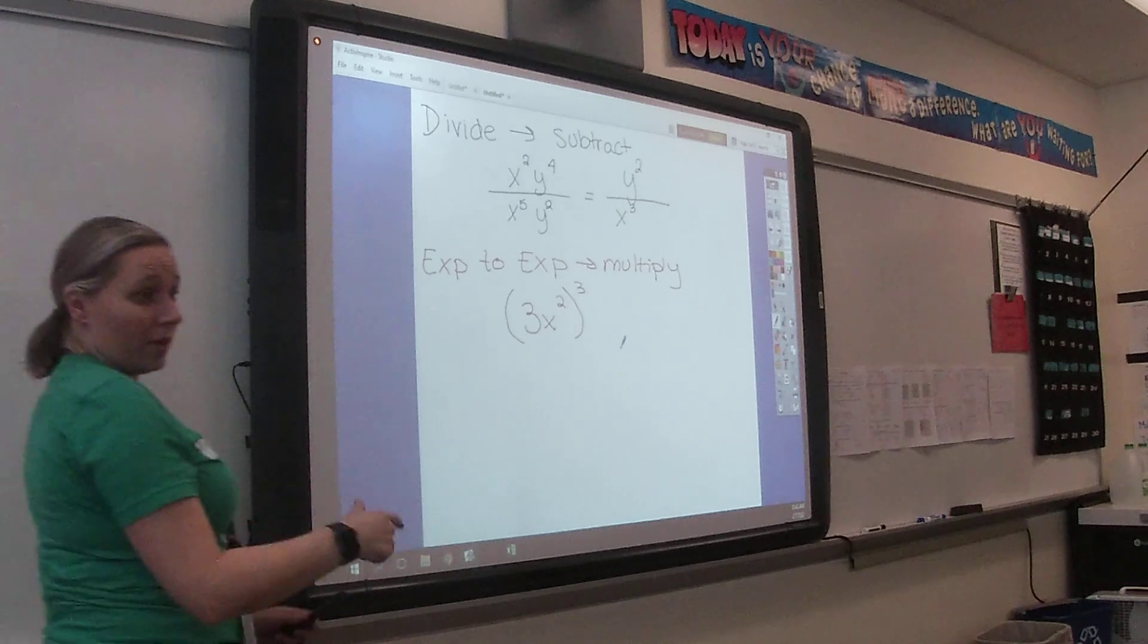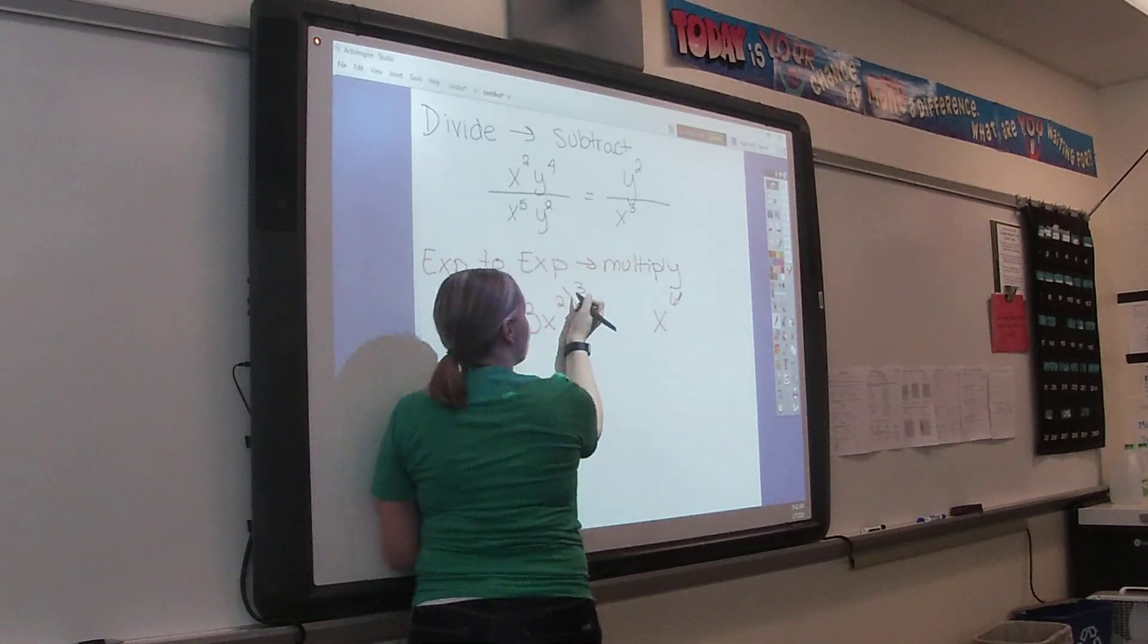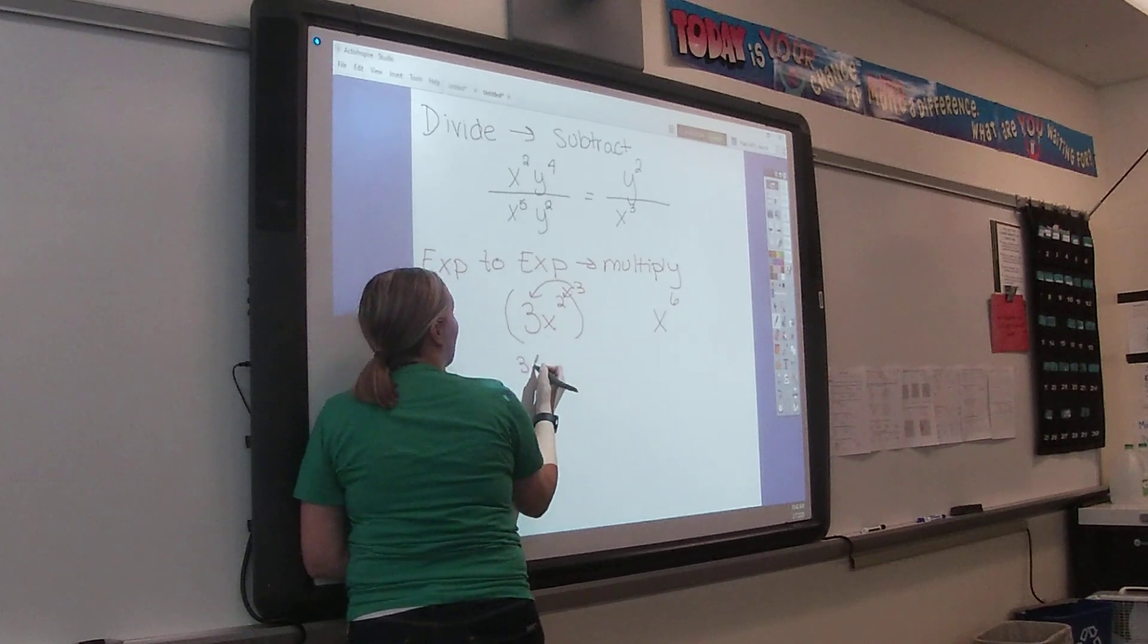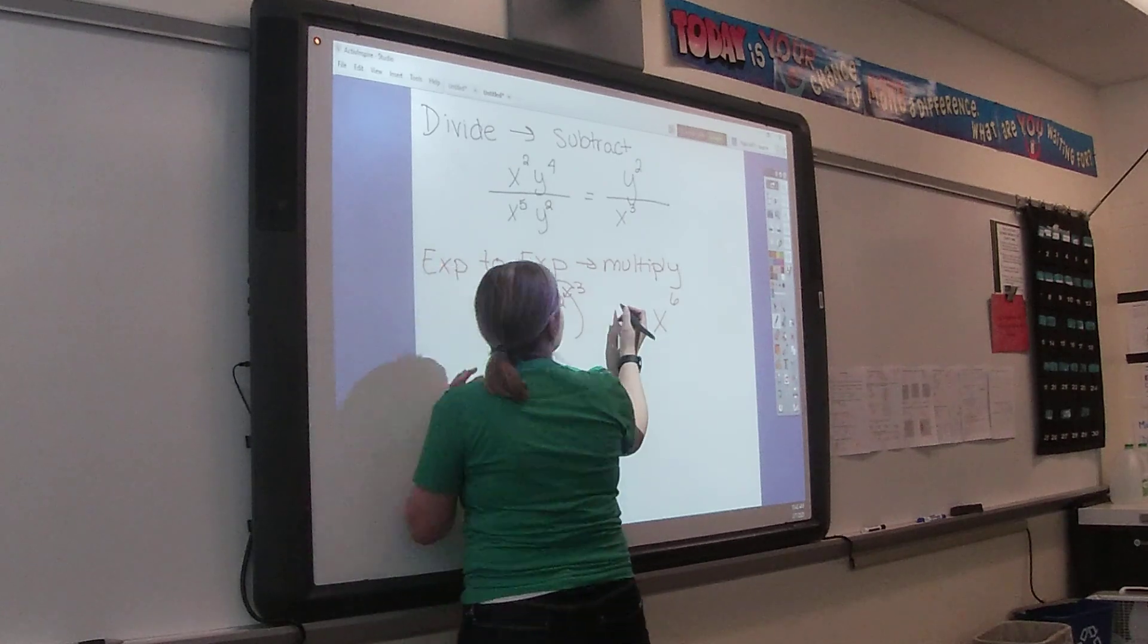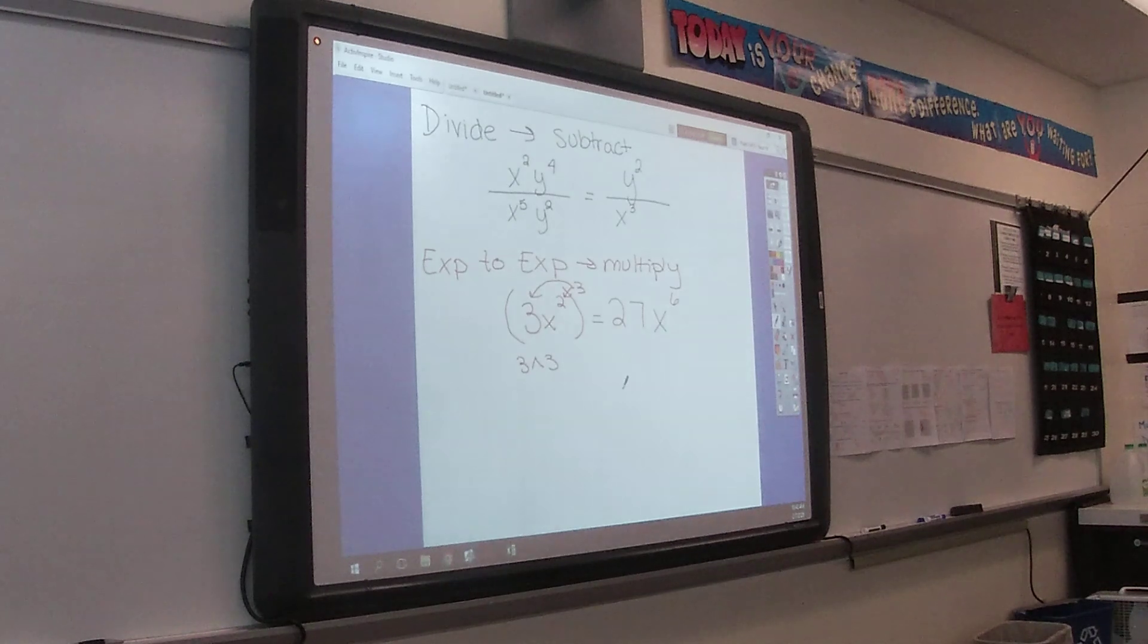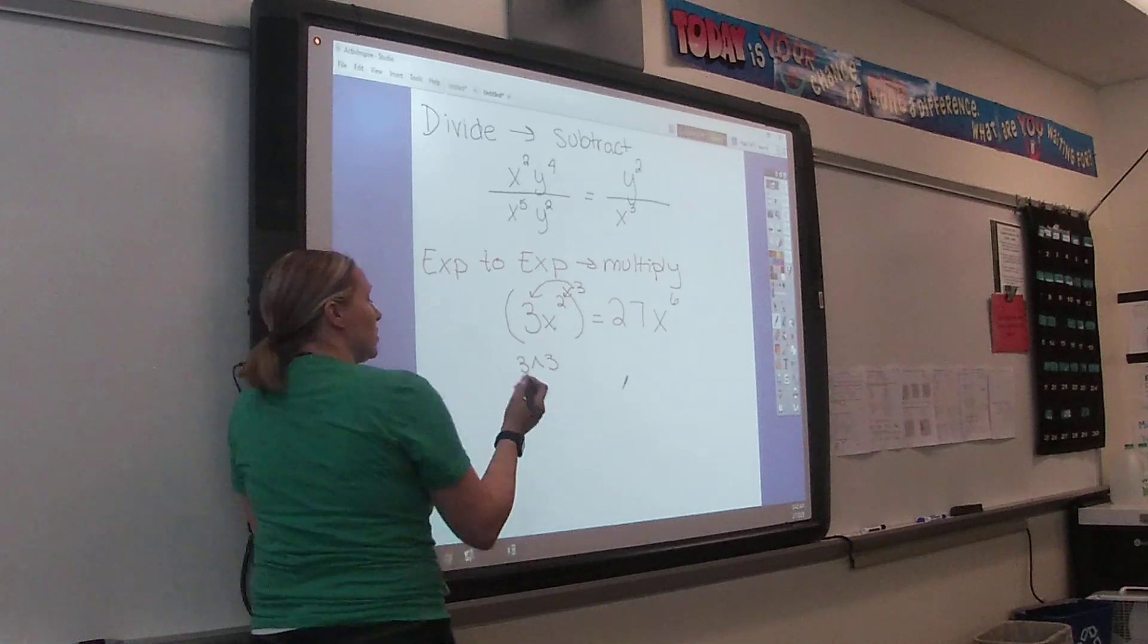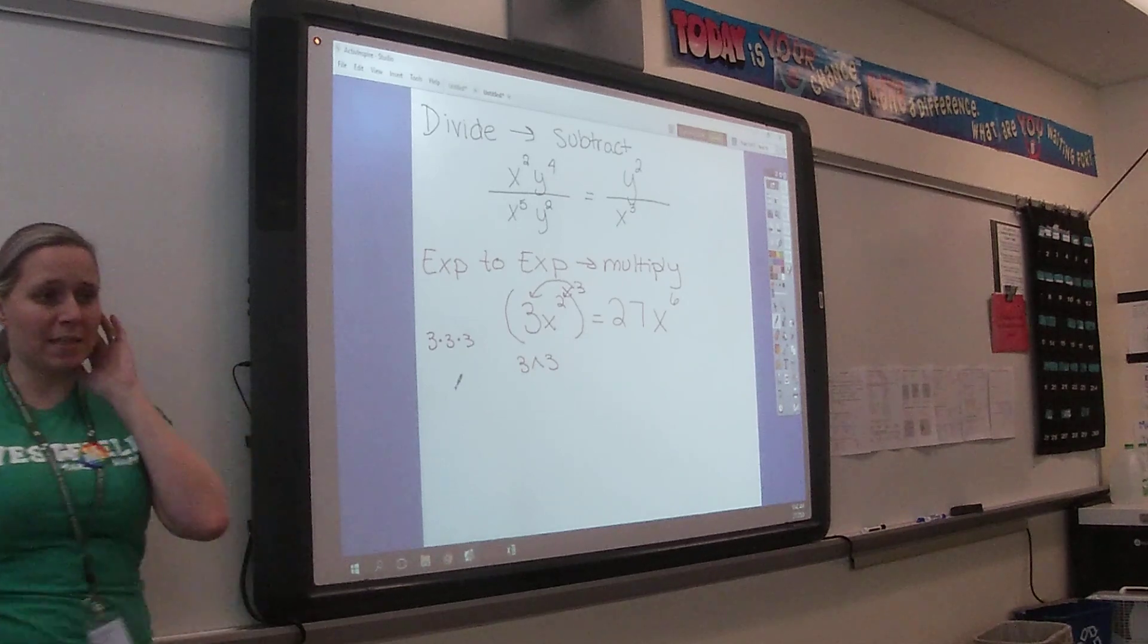3X squared to the third. The X to the sixth I'm good with. But it's not 9 because it's 3 times 3 times 3. You're exactly right. And that's the piece that we've all been struggling with. So write in your calculators 3 to the power of 3, which would be 27. Because we want 3 to the third power, not 3 times 3.